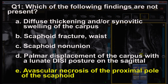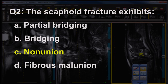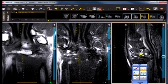The other statements are true: there is synovitic swelling of the carpus, there is a scaphoid waist fracture, there is scaphoid nonunion, and there is palmar or volar displacement of the carpus with dorsal tilting of the lunate — so-called DISI. Question number two: the scaphoid fracture exhibits nonunion. Although we don't yet have a pseudarthrosis with pseudocysts, there is no bridging from one bone fragment to the other, no partial bridging, and no fibrous malunion for reasons already discussed.